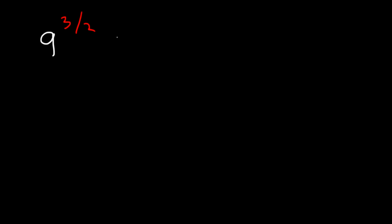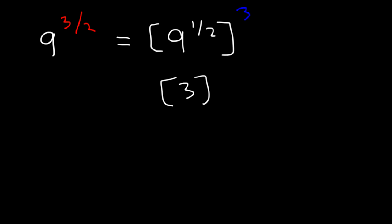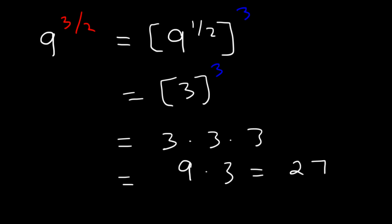Let's try another example. Calculate the value of 9 raised to the 3 over 2. We're going to find the square root of 9, which is 9 to the 1/2, and then raise it to the 3rd power. The square root of 9 is 3. And 3 to the 3rd power is 3 times 3 times 3: 3 times 3 is 9, and 9 times 3 is 27. So 9 to the 3/2 is 27.